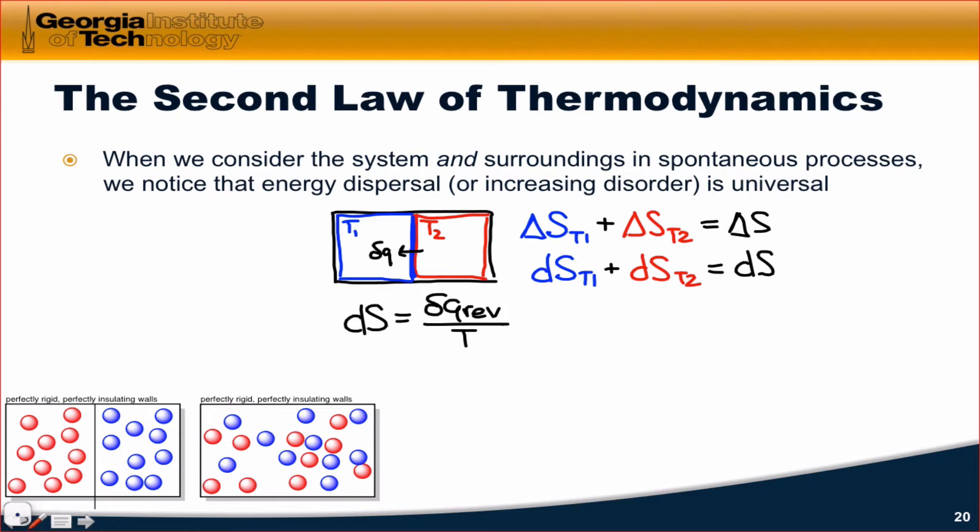Since heat is flowing into the colder block, we represent del Q as positive del Q divided by T1. And since heat is flowing out of T2, the entropy change here is negative del Q divided by T2.